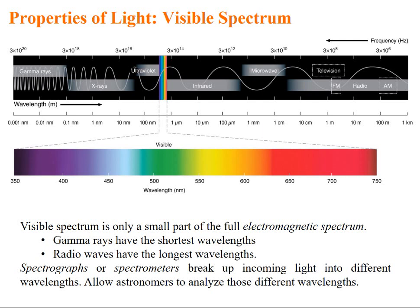Let us talk about visible spectra. Visible spectrum is only a small part of the full electromagnetic spectra. Gamma rays have the shortest wavelength. Radio waves have the longest wavelength. Spectrographs or spectrometers break up the incoming light into different wavelengths and hence, allow astronomers to analyze those different wavelengths.